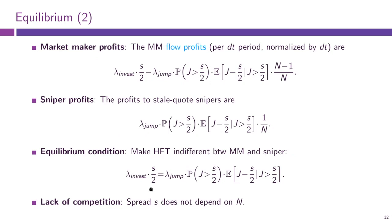Let us compute the profits of different kinds of high-frequency firms. The expected flow profit of the market maker — profit per small time period dt normalized by dt — works as follows: with rate lambda_invest an uninformed noise trader arrives and submits an order, in which case the market maker gets s/2 in profit due to the spread. But another event is that news arrives — with rate lambda_jump the fundamental value of the asset changes and signal y is regenerated.